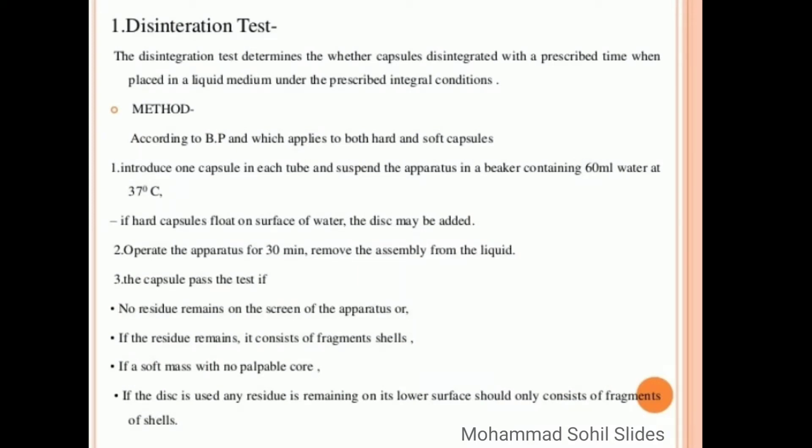Now what method is required for disintegration test according to British Pharmacopoeia, which applies to both hard and soft capsules? Introduce one capsule in each tube and suspend the apparatus in a beaker containing 60 ml water at 37 degrees Celsius. If hard capsule floats on surface of water, the disc may be added. Operate the apparatus for 30 minutes.